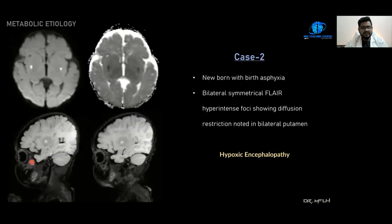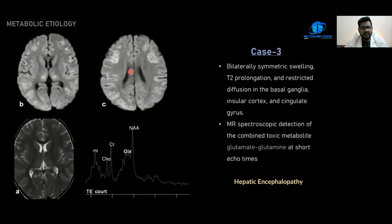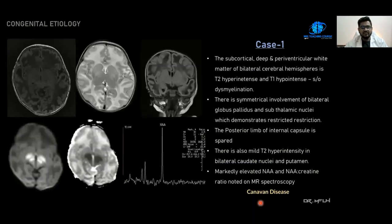This is another case of a newborn presenting with birth asphyxia. Here we can see bilateral symmetrical FLAIR hyperintensities showing diffusion restriction in the bilateral putamen. This is a case of hypoxic encephalopathy. Another infant shows bilaterally symmetric swelling, T2 prolongation, and restricted diffusion in the basal ganglia, insular cortex, and cingulate gyrus. On MR spectroscopy, a toxic metabolite peak of glutamate and glutamine is seen at short TE times. This is a case of hepatic encephalopathy.